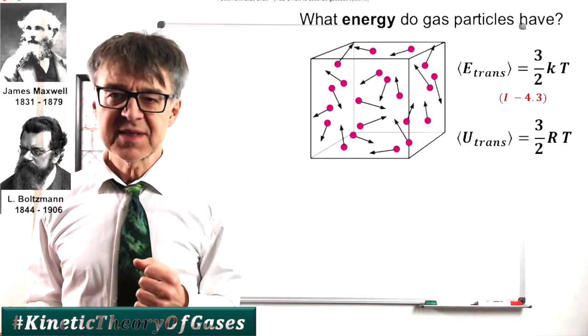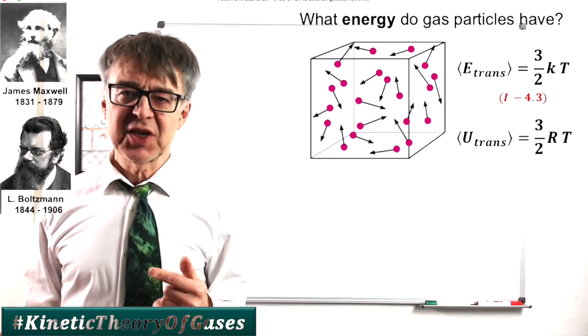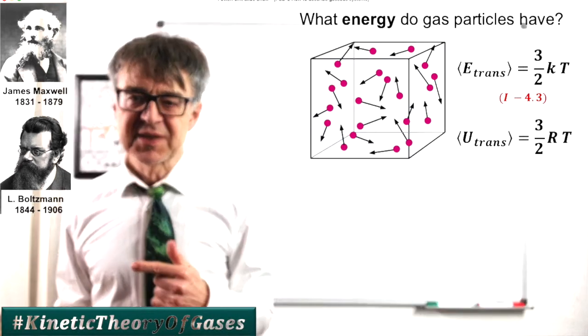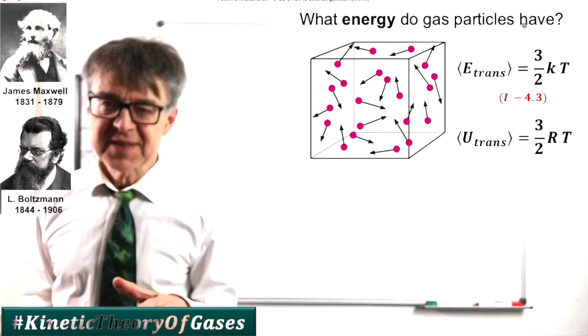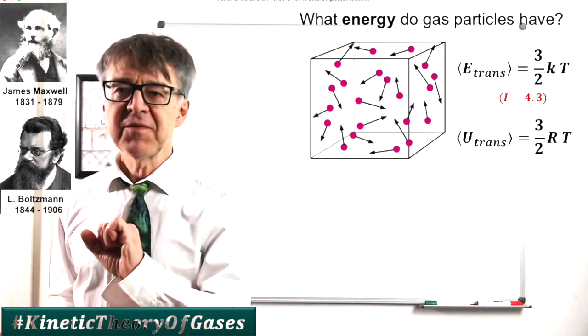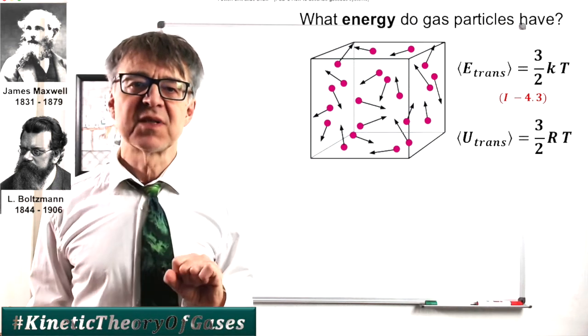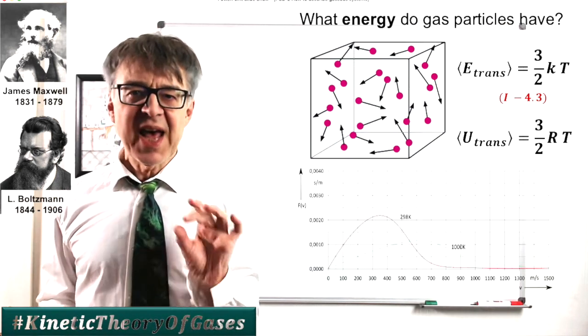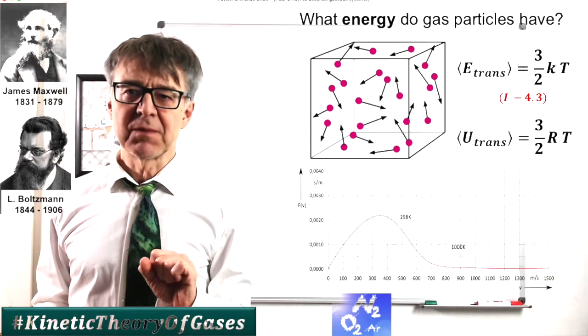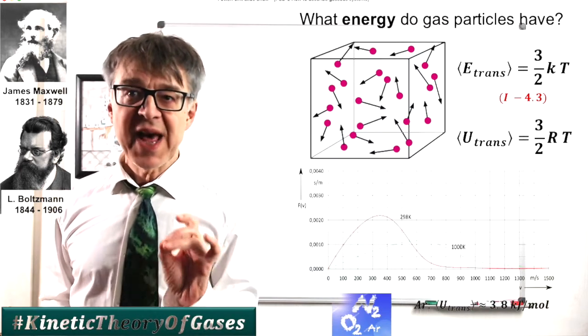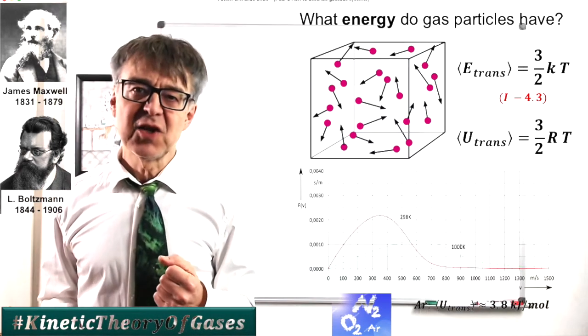The microscopic phenomenon temperature is simply a measure for the energy of the translational movement of the particles. U sub-trans, this is the average kinetic energy of the particles, which is associated with locomotion in space, equals 1.5 times R times T.